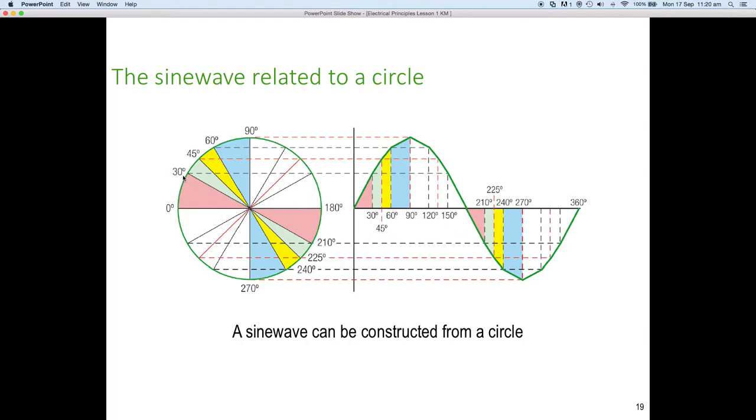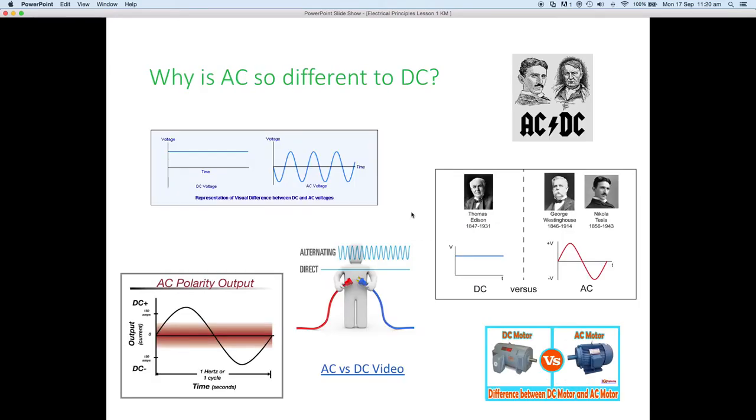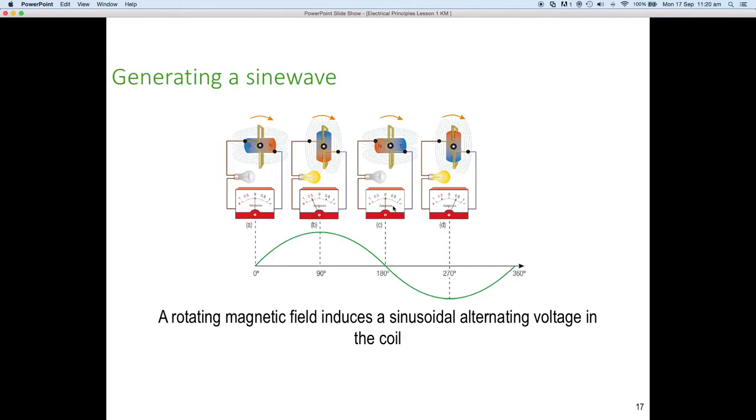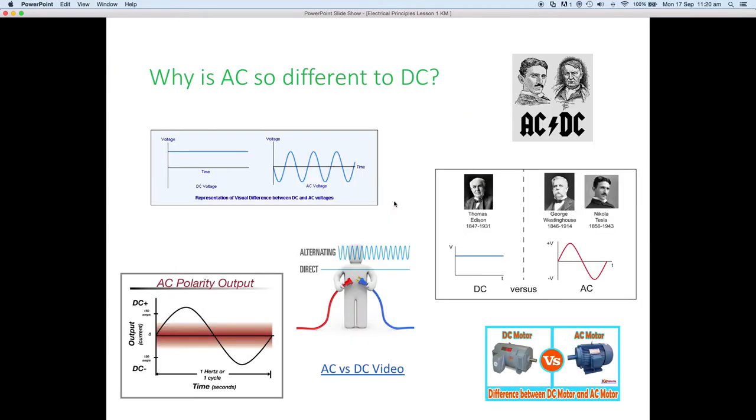So, here we're taking 30 degrees and then connecting it to 30 degrees on the horizontal, we get that point. We take 45 degrees on the circumference and go to 45 degrees on the vertical, so on and forth. At 90, we get our maximum positive and again at 180, there is nothing.